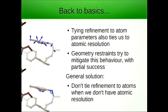Right, so do we have to do all of this? Well, tying refinement to atom parameters also ties us to atomic resolution and then we're patching the fact that we're tying ourselves to individual atoms by introducing geometry restraints to mitigate this behavior with a certain amount of success. I'm going to suggest an alternative approach which is don't tie the refinement to individual atoms when we don't have atomic resolution. And that's really the key step here.